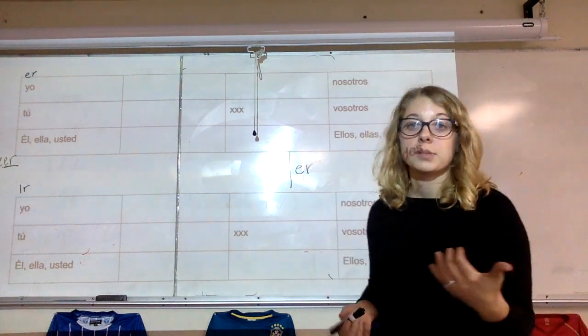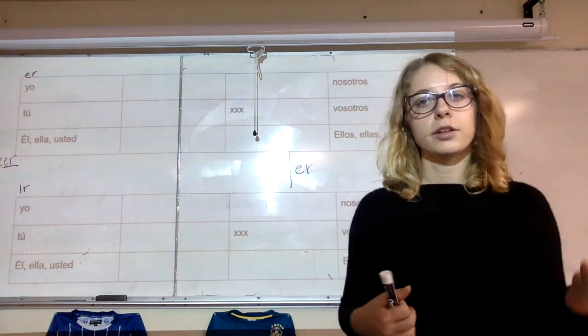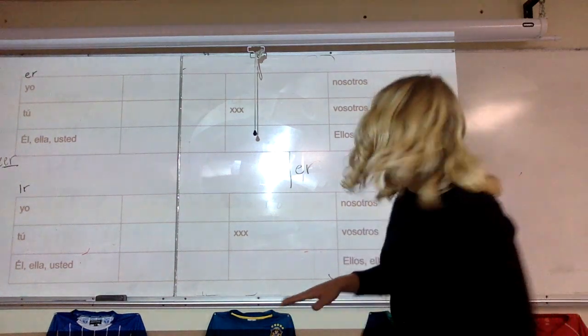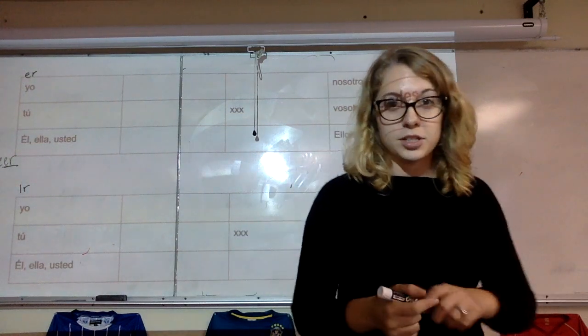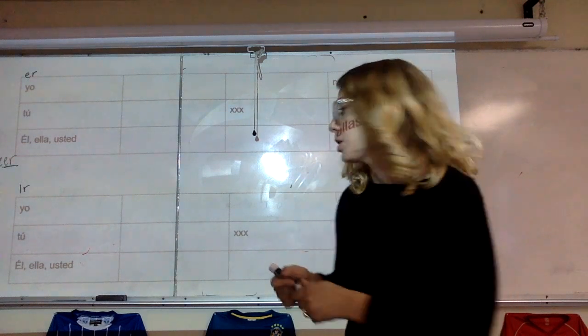So as we know, we have verbs that end with AR, ER, or IR, and we've already learned how to do AR conjugations. So today we're going to be learning about ER and IR verb conjugations, which fortunately for us are practically the same.